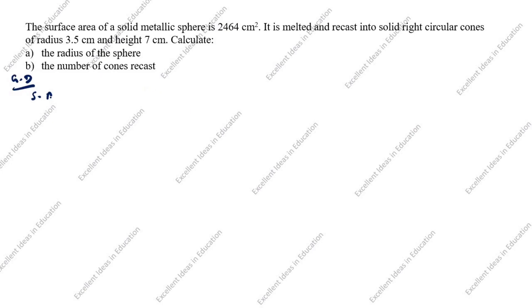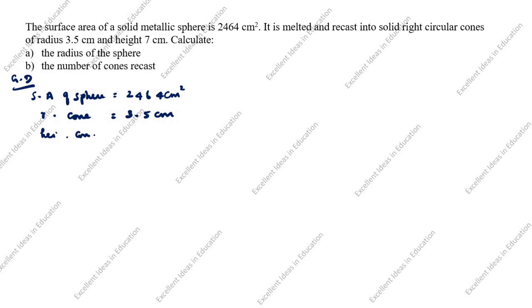Given data: surface area of the sphere is 2464 centimeter square. It is melted and recast into solid right circular cones. Radius of cone is given as 3.5 centimeter. Height of cone is given as 7 centimeter. First, we need to find the radius of the sphere.